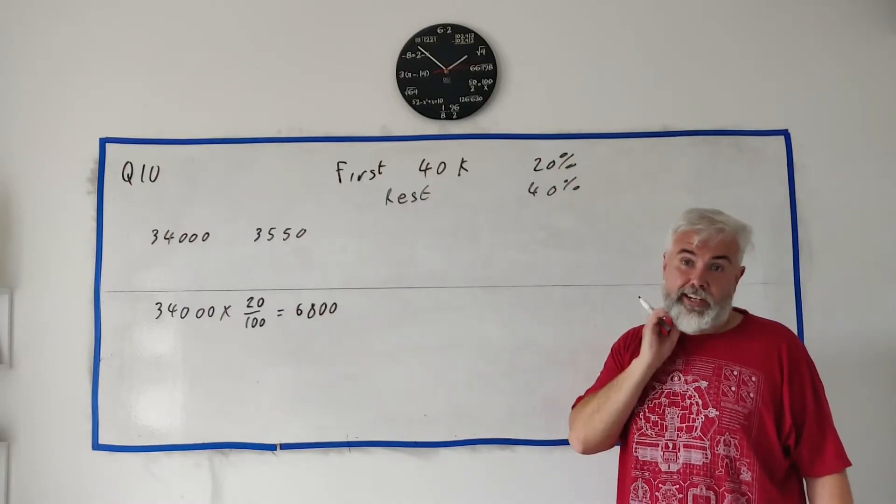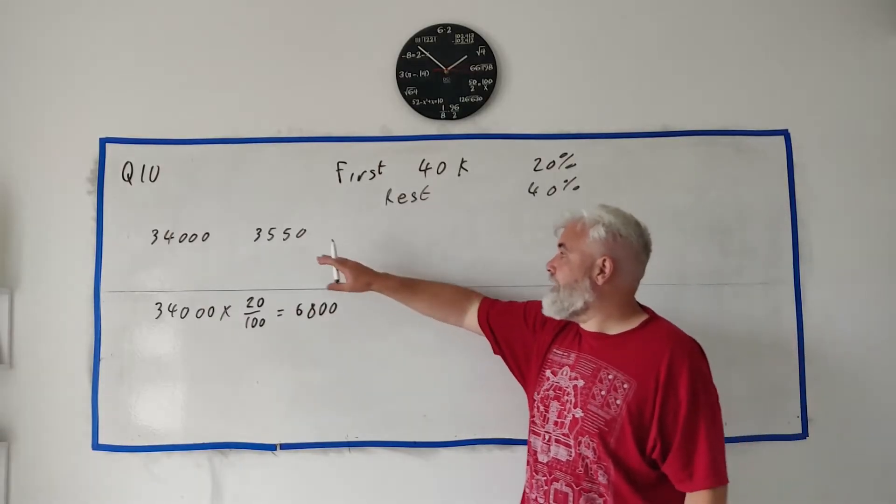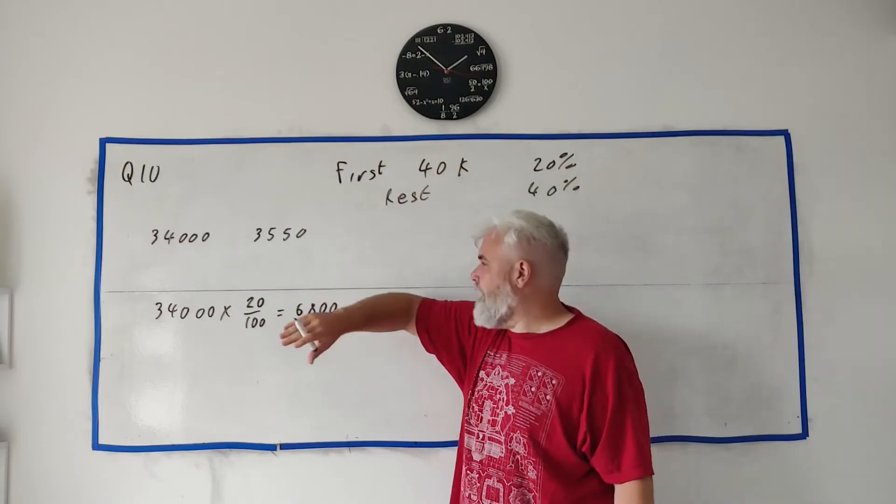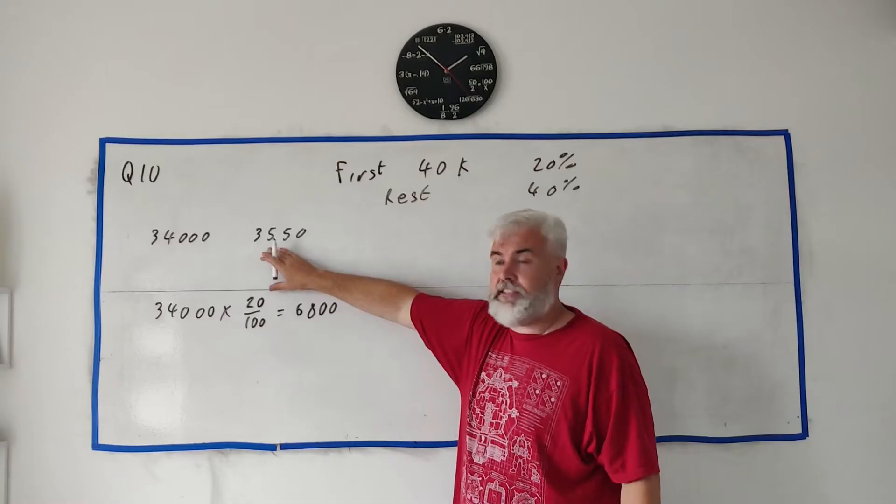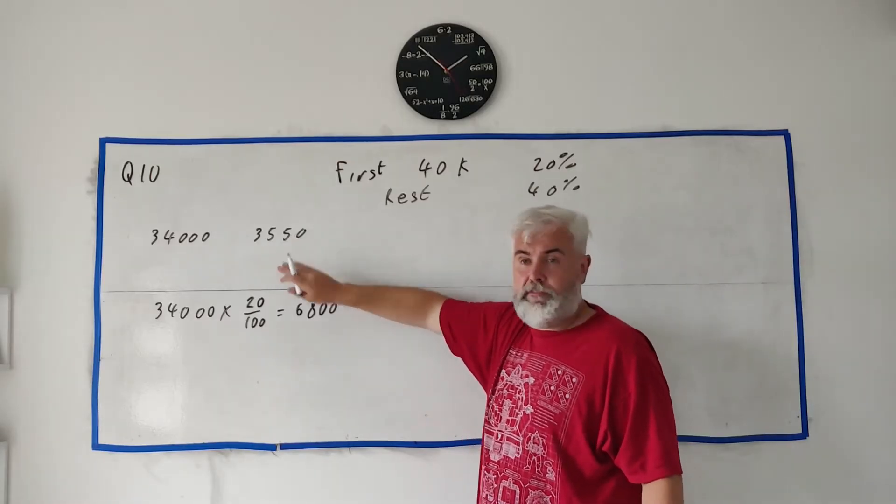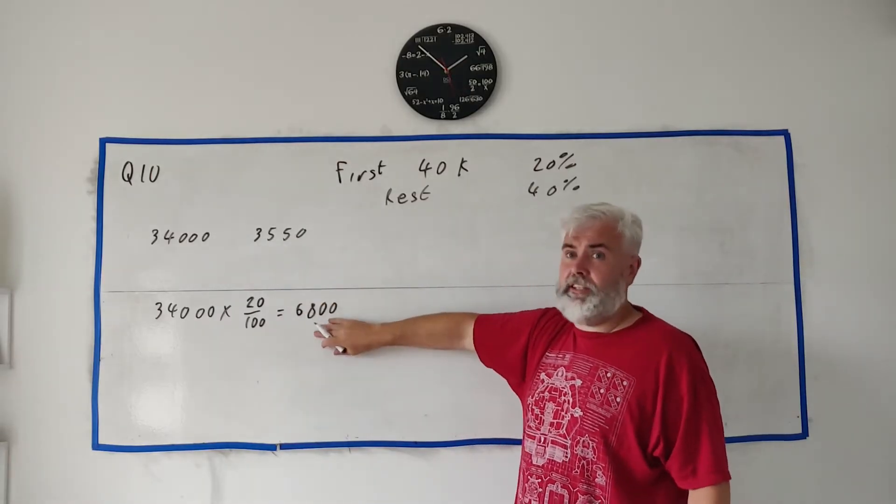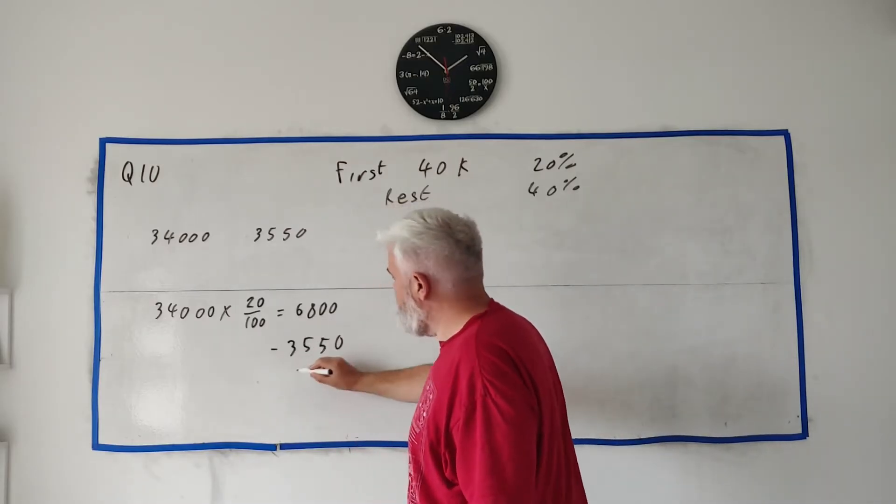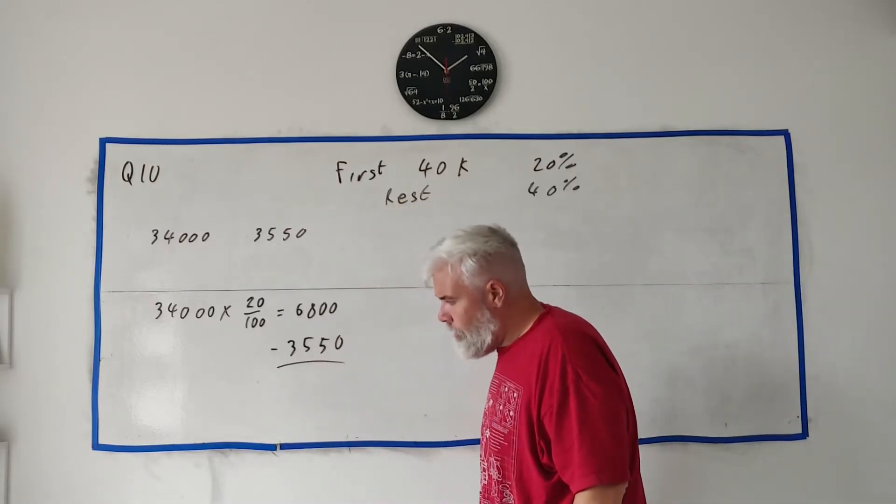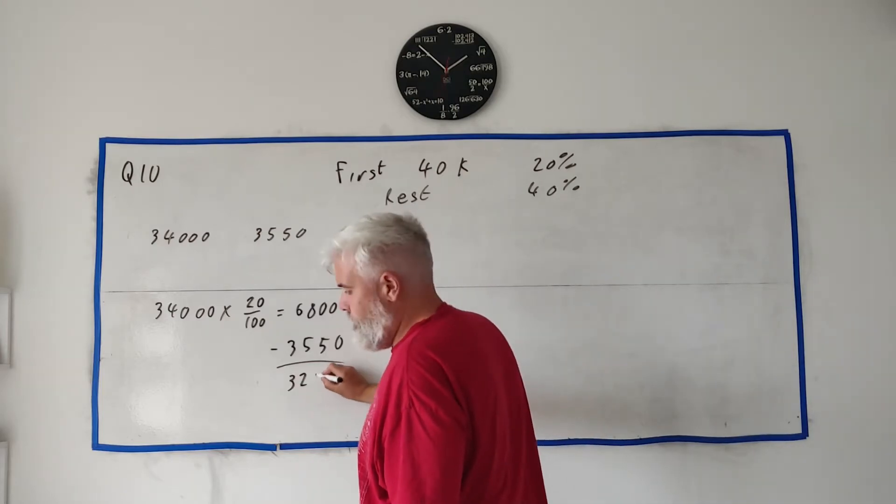Let's work out how much tax she has to pay. €34,000 multiplied by 20%, that's 20 over 100. What is that equal to? That equals €6,800. That's how much tax Olivia owes. But there's tax credits. The tax credit Olivia gets is €3,550.